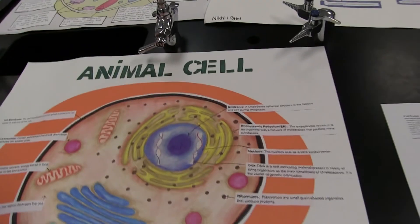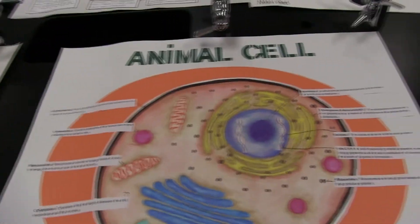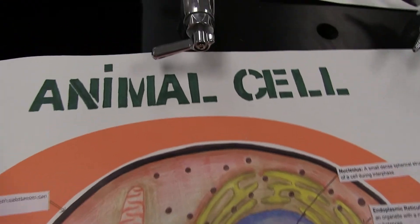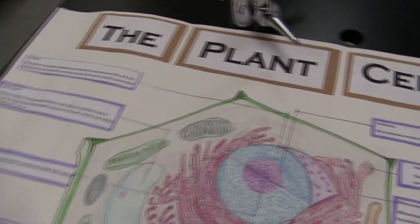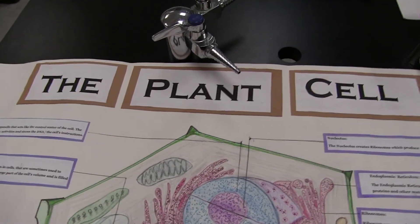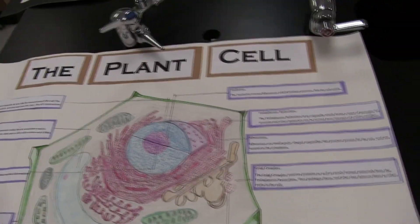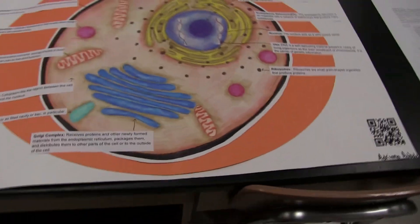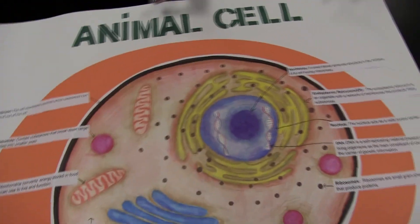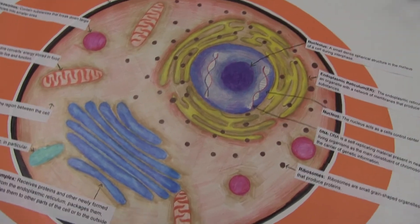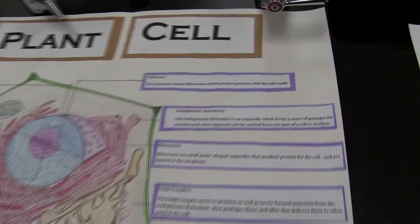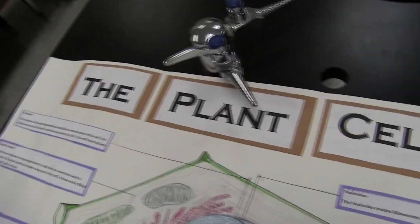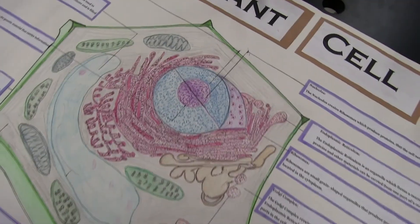Number one: you get to choose between the kind of cell poster you want to make. You can either make an animal cell or you can make a plant cell — whichever one you want. Whether you do an animal cell or a plant cell, you have to include the same things. You have to include a picture of the cell.